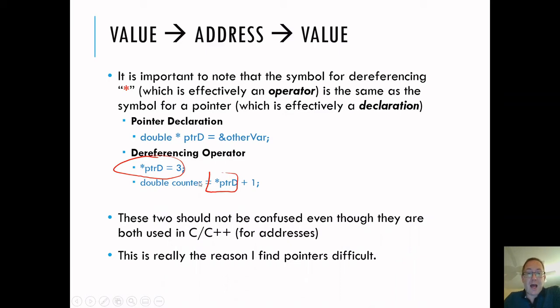This would be, I am going to make a new variable called counter. I'm going to figure out whatever the value for pointer D is. So pointer D is pointing to other value. So I'm going to go into other value and get the value for other value here. So I follow the pointer, which is then pointing to other val. So I go into other val, get the value in other val and plus one. The counter is equal to other val plus one in this case, because the pointer is pointing to other val.